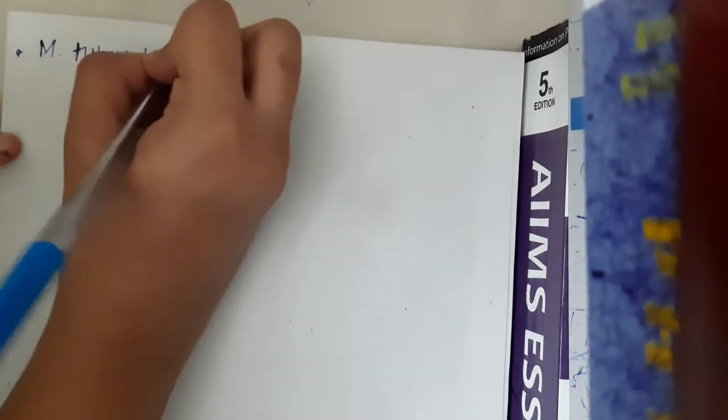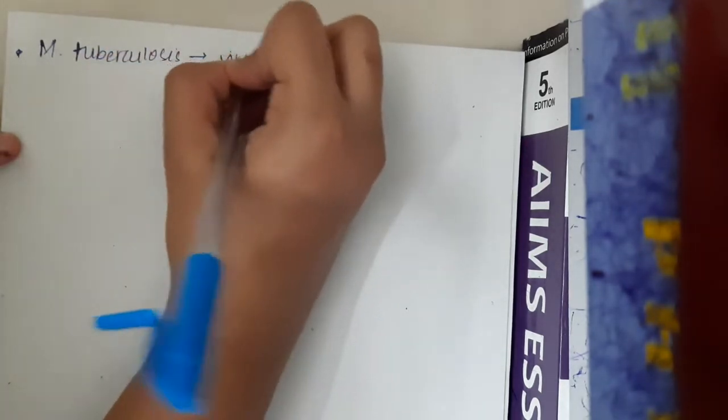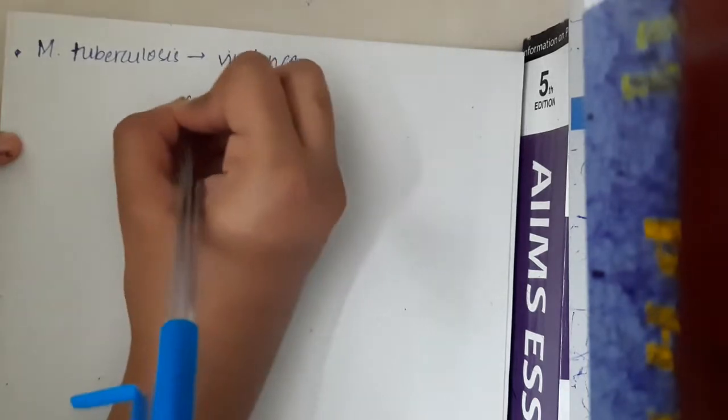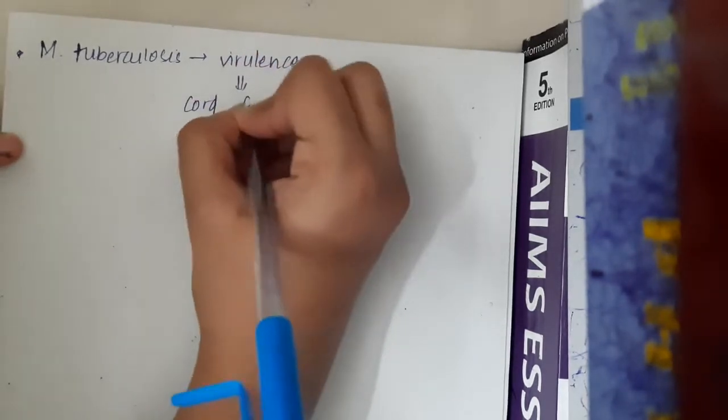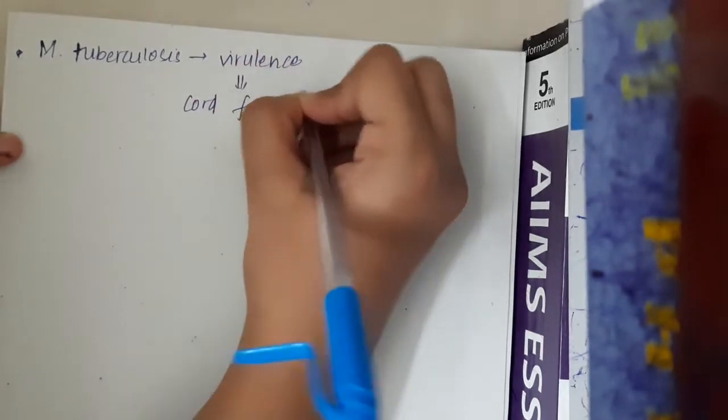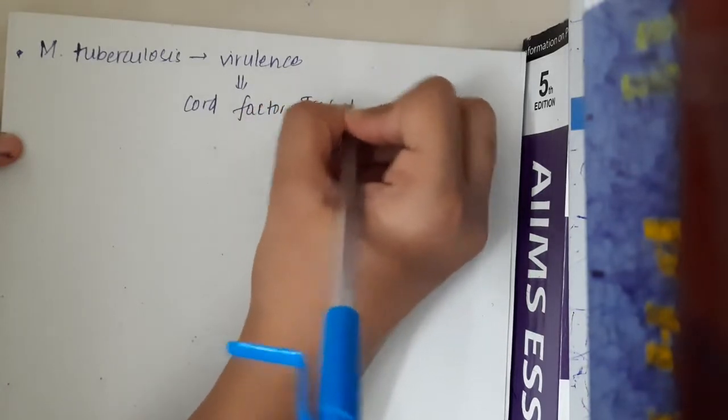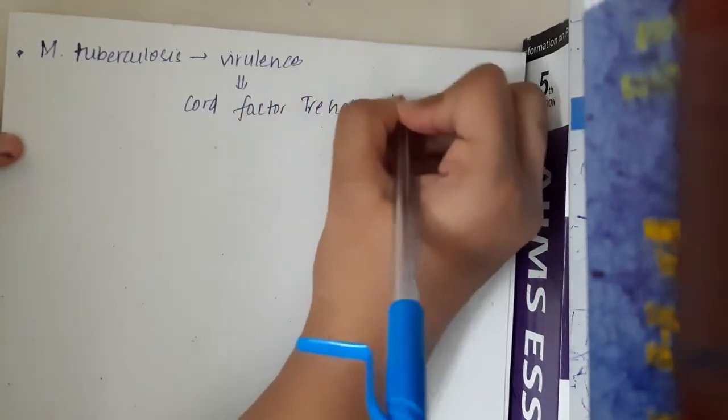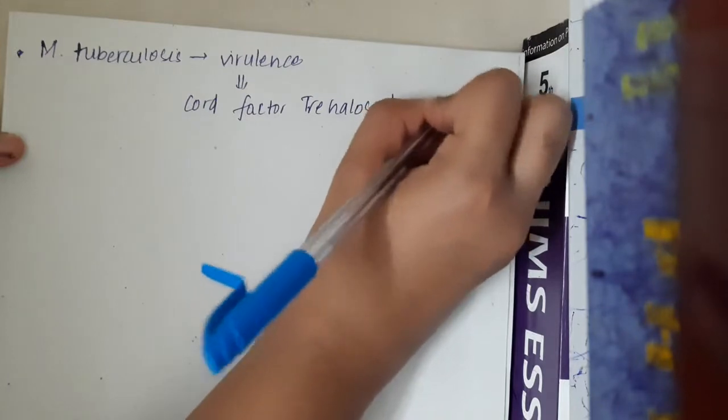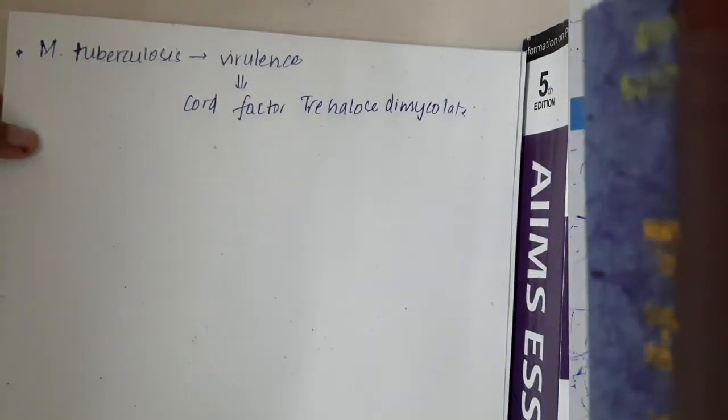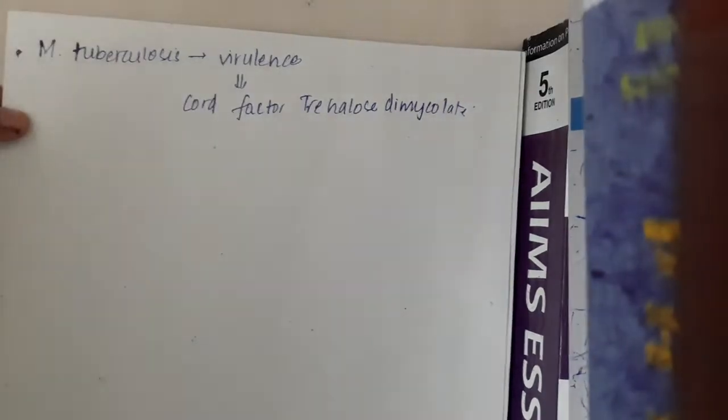...is about Mycobacterium tuberculosis. Why is Mycobacterium tuberculosis virulent? Virulence of Mycobacterium tuberculosis mainly depends upon cord factor, which is trehalose dimycolate. This is an important one-liner which has been asked.